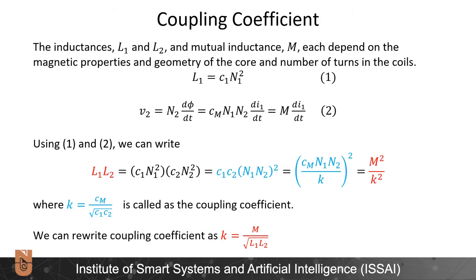The inductances L1 and L2 and mutual inductance M each depend on the geometry of the core, material properties, and the number of turns in each coil. We have seen L1 equals C1 times N1 squared, and that the voltage induced at the terminals of the second coil V2 equals the mutual inductance times dI1 over dt. Combining these, we can write L1 times L2 equals C1 times N1 squared times C2 times N2 squared, which equals C1 times C2 times (N1 times N2) squared.